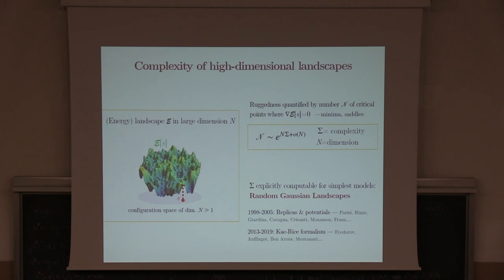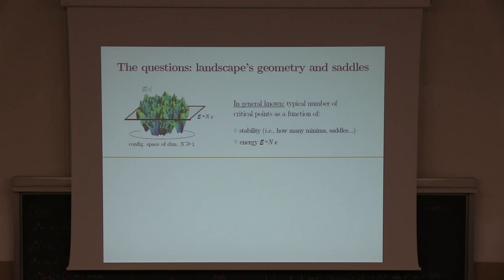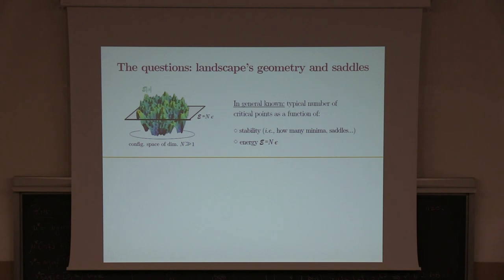This was done back in the 90s by many of the people here using replicas or clones or replica potentials. And as we saw recently, some of these results have even been put on rigorous grounds by mathematicians with the Kac-Rice formalism. What this calculation allows one to get is, in general, the typical number of critical or stationary points as a function of their stability — whether they are minima or saddles — and as a function of their energy or depth in the landscape, which is already important information if one wants to characterize the dynamics, whenever the dynamics can be interpreted as a motion along the surface of this landscape attempting to reach the global minimum.